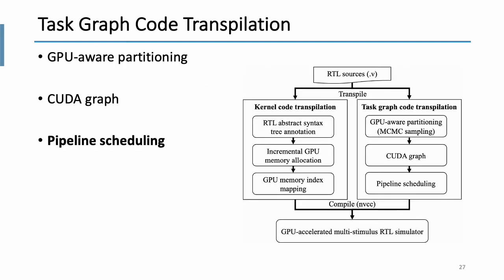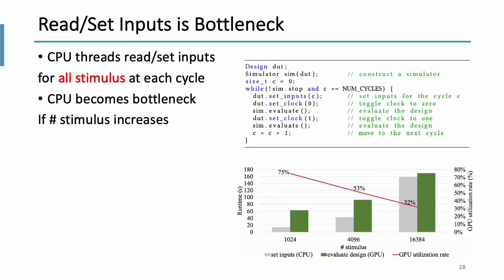Last one, pipeline scheduling. So why we need pipeline scheduling? As I mentioned before, multi-stimulus RTL simulation incurs significant overheads in setting the inputs, which in turn causes the GPU to wait. To overcome this problem, we further partition batch stimulus into groups and use a pipeline scheduling algorithm to overlap CPU and GPU tasks within a cycle.